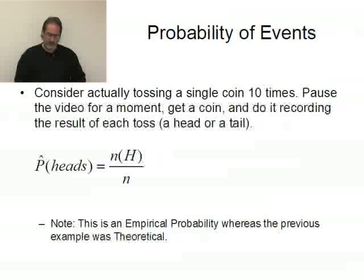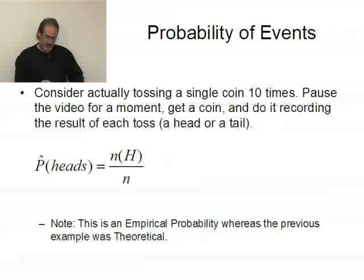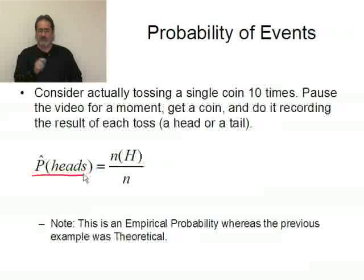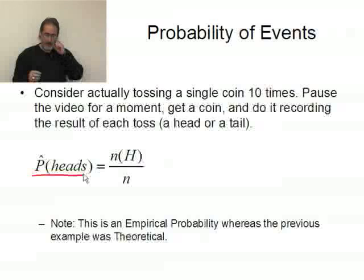Consider actually tossing a coin ten times. Go ahead and pause the video for just a minute, grab a coin, and do it. Record the results. A smart way to record the results may be in terms of ones and zeros. I'm asking for the probability of a head, so every time I toss a coin, if I get a head I write down a one; if I get a tail I write down a zero. The reason is that if I add up all those numbers, whatever it adds up to, that's the number of heads. Go ahead and do that, then come back when you're done.